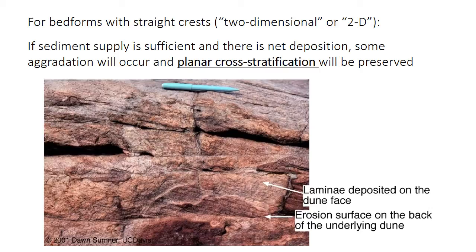For a ripple or dune with a straight crest — so if you look down on the bed form from above, the crest would look straight — the type of cross-stratification it forms is called planar cross-stratification. It's basically a giant dipping plane, which in the photo we're viewing from the side. These straight-crested bed forms are sometimes called two-dimensional or 2D bed forms. This particular example is from dunes — remember that ripples are only a couple centimeters tall, so this cross-stratification is much too large to have been generated by ripples.